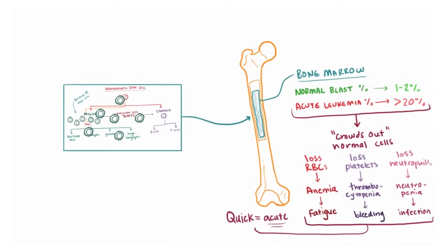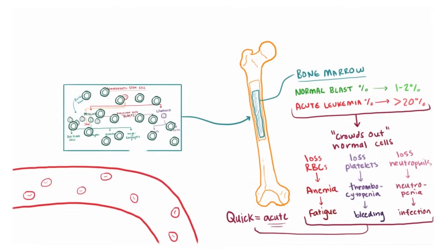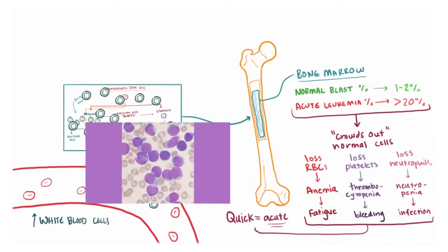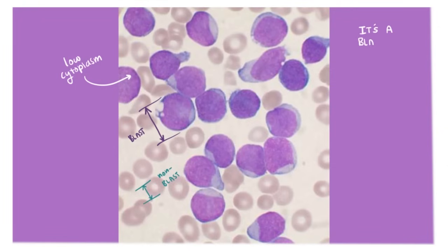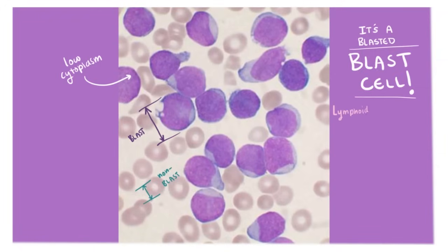Eventually, these blasts build up to a point where they start to spill out into the bloodstream, which typically causes your white blood cell count to go up. If you took a peek at a blood smear, there are a couple things to look for. First, look at how large these cells are compared to normal cells. Another thing is that they'll be pretty immature, judging by this relatively low amount of cytoplasm. So we've figured out it's a blast cell — but what kind of blast cell is it? Lymphoid or myeloid?